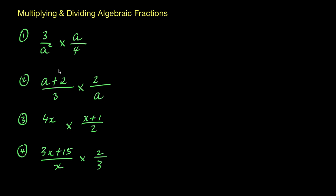In this lesson we're going to look at some quick examples on multiplying and dividing algebraic fractions. When you're multiplying algebraic fractions, all you're really doing is merging those fractions together by multiplying the top and the bottom. Now if you see any common factors when you're doing that, you can also cancel those out, and I'll show you how that happens as well.